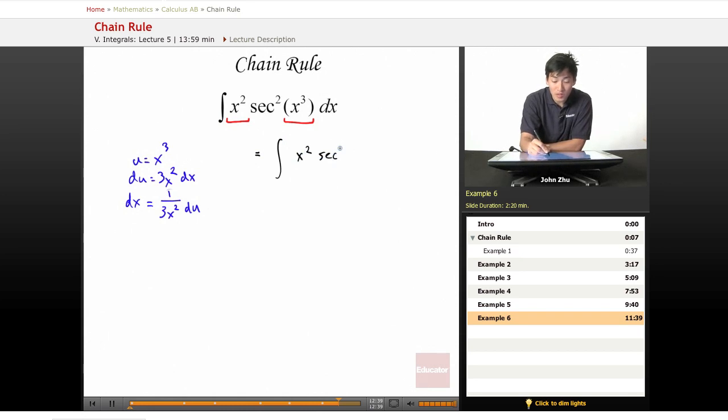x squared, secant squared of u and 1 over 3x squared du. If we simplify this a little bit,